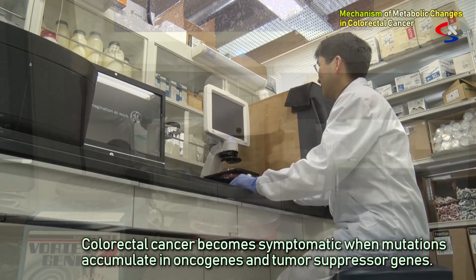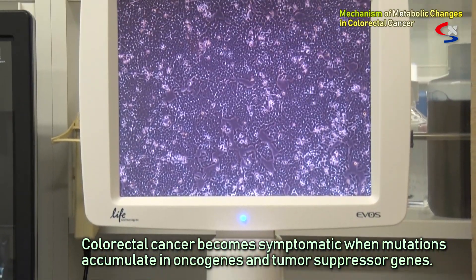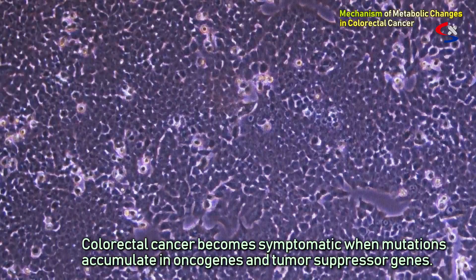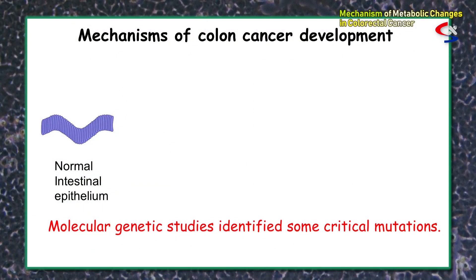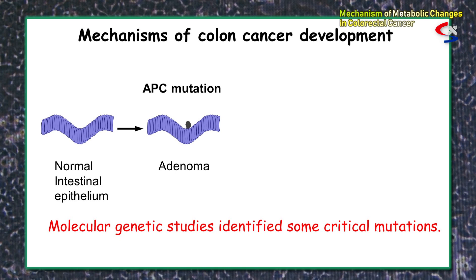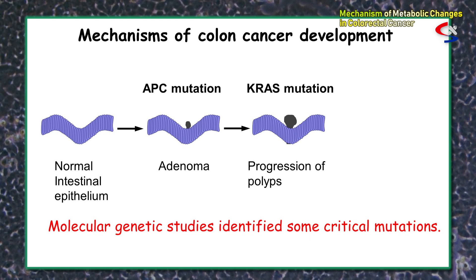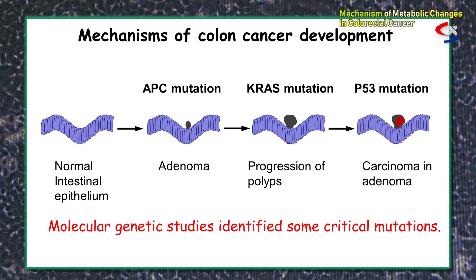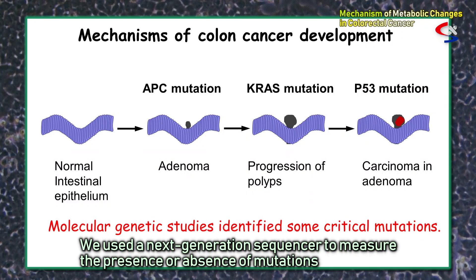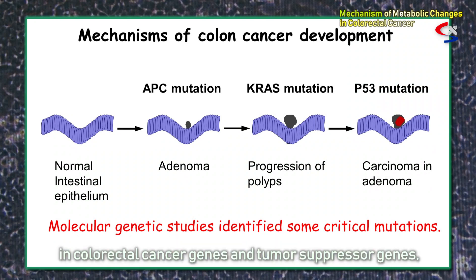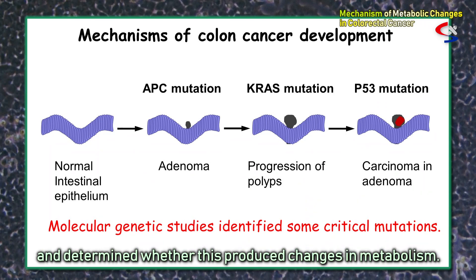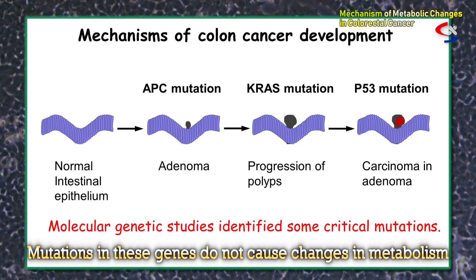Colorectal cancer becomes symptomatic when mutations accumulate in oncogenes and tumor suppressor genes. It is known that in normal intestinal epithelial cells, polyps appear if mutations occur in APC, then grow when KRAS is mutated, and furthermore, mutation in p53 leads to cancer. With this in mind, we used a next-generation sequencer to measure the presence or absence of mutations in colorectal cancer genes and tumor suppressor genes, and determined whether these produced changes in metabolism. From this, we learned that mutations in these genes do not cause changes in metabolism.